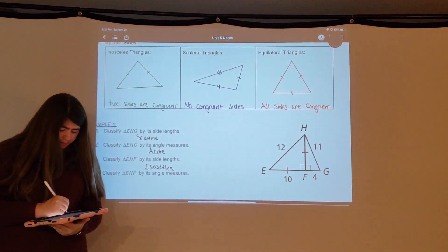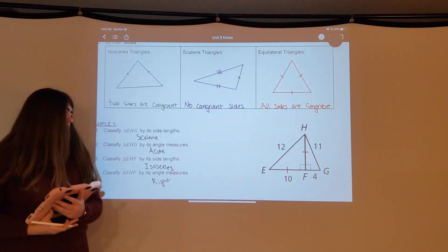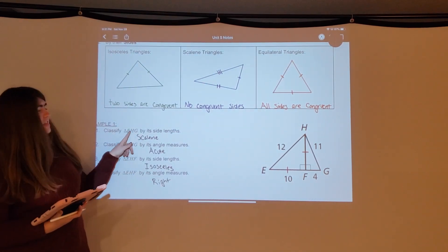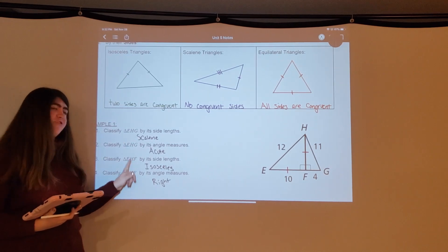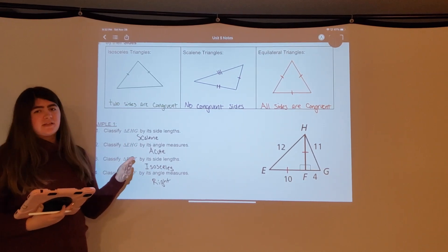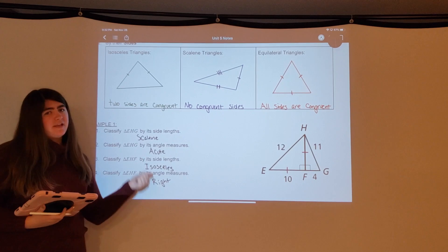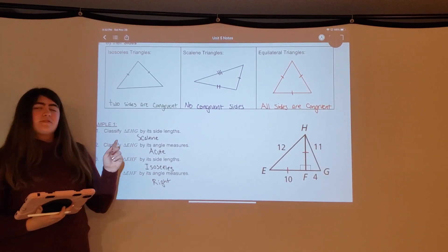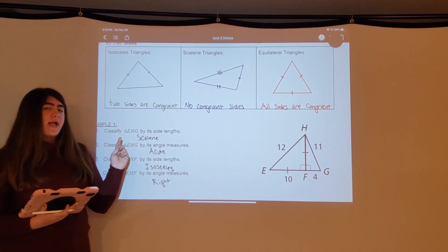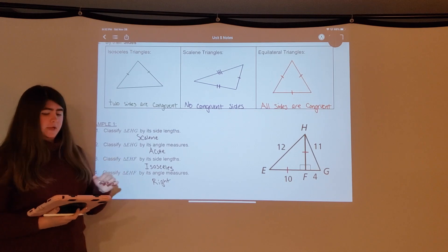You might notice we classified the same triangle twice — once by sides and once by angles. Every triangle is classified by both angles and sides, so it's not just one category it falls into; it can fall into more than one category.